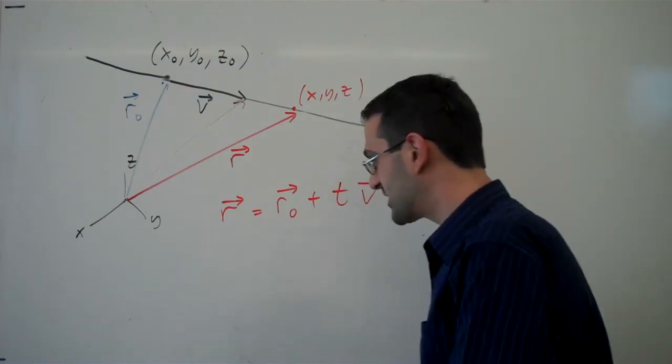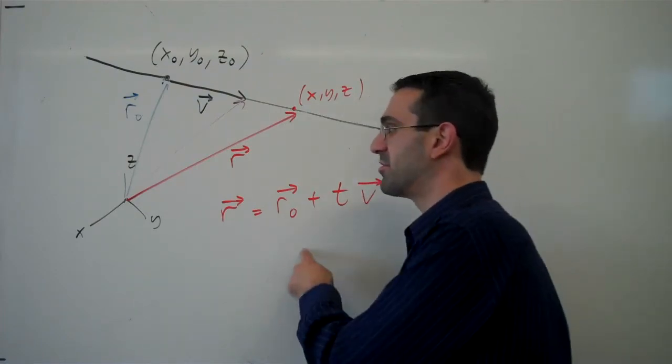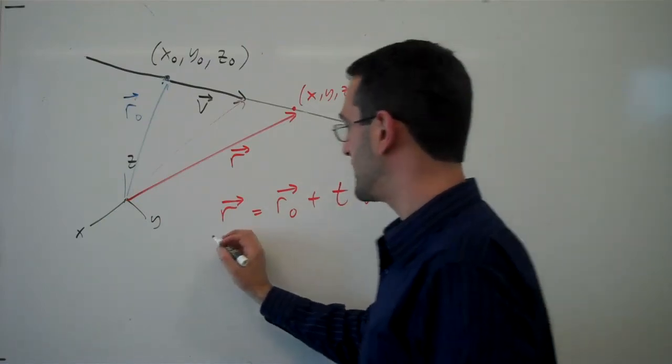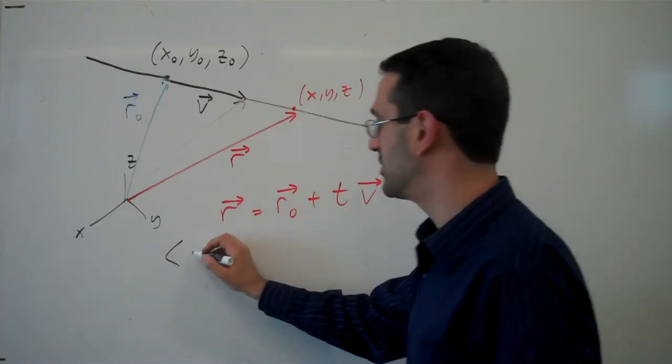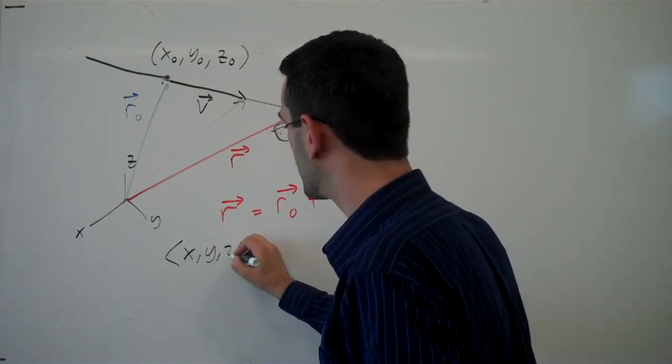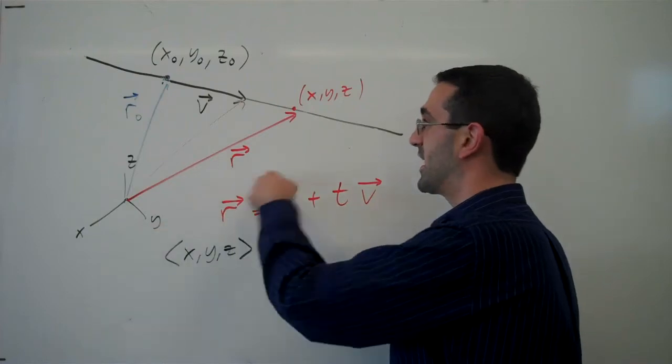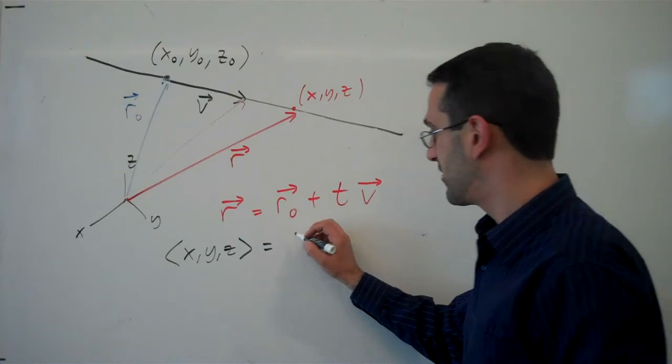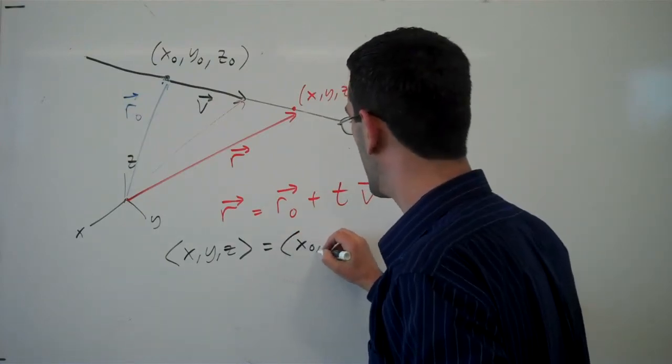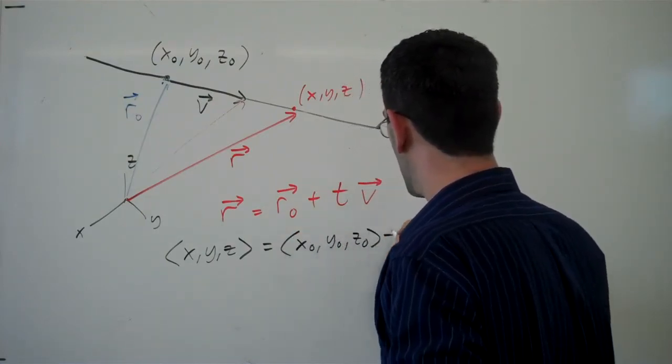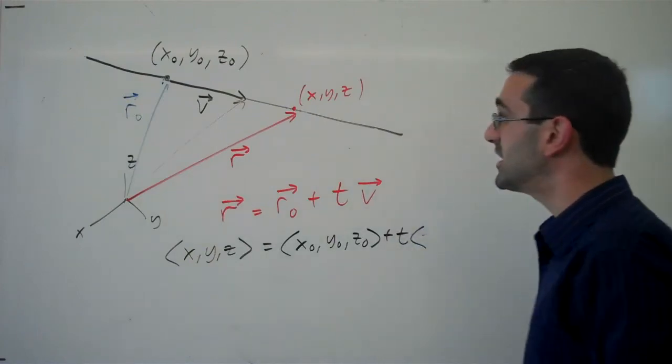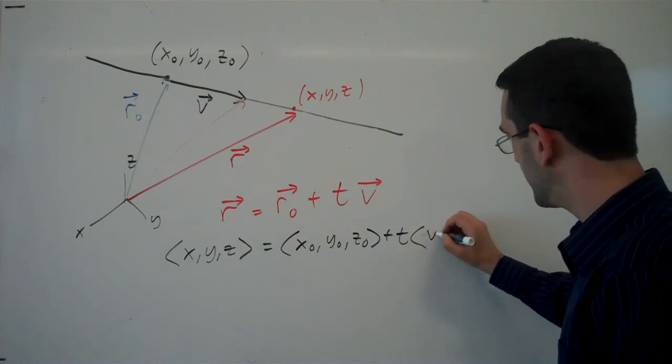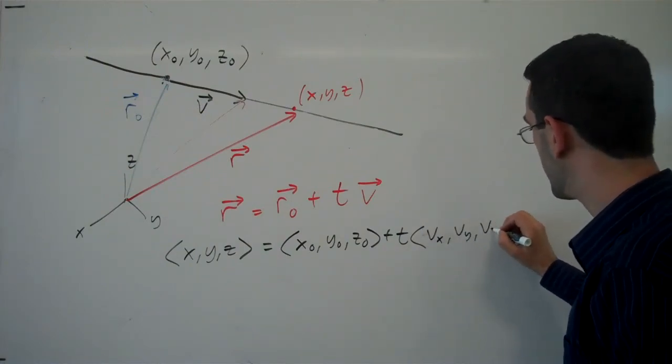Now, in some cases this vector form of a line is not horribly convenient, so we could break this down and say the vector r is the vector pointing to x, y, z. This would be the vector from the origin out to x, y, z. The vector r naught here is x naught, y naught, z naught. And let's say the vector v has components v sub x, v sub y, and v sub z.